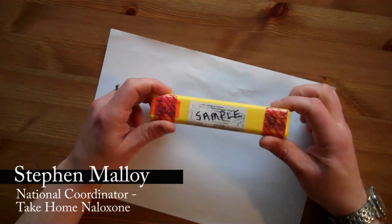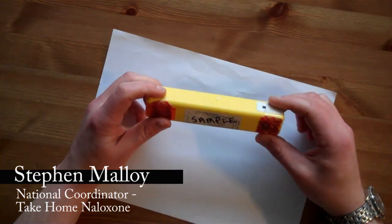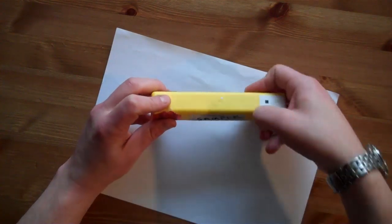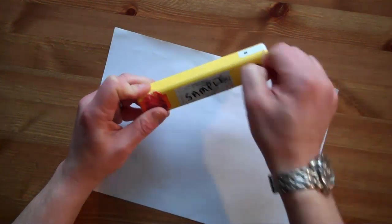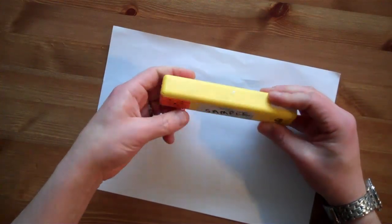Okay, so this is a sample naloxone kit. First thing we have to do is remove the red security seals from each end of the box.